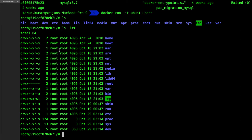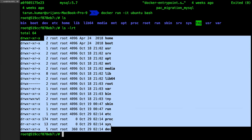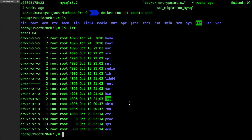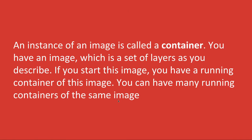An instance of an image is called a container — this is very important. An image stays forever unless you delete it, but a container is an instance: it can be up and running, stopped, restarted, or deleted, and you can create it again from the image. It's like a class and an object — the container is the object or instance of the Docker image.